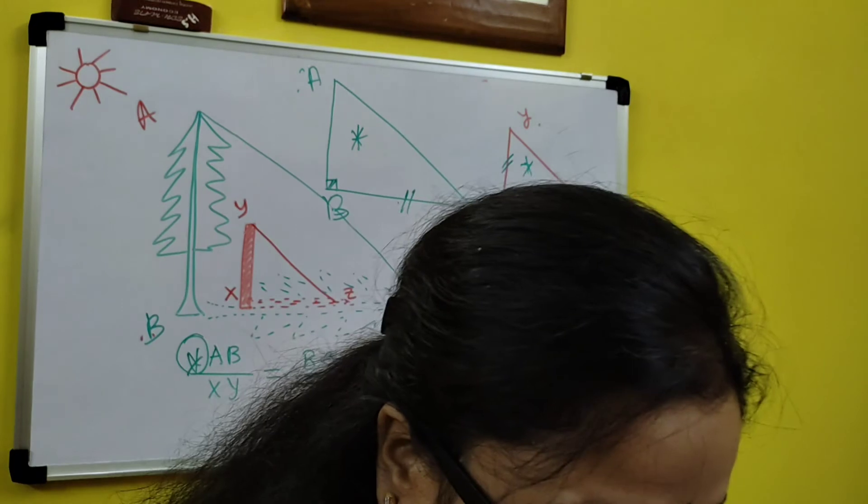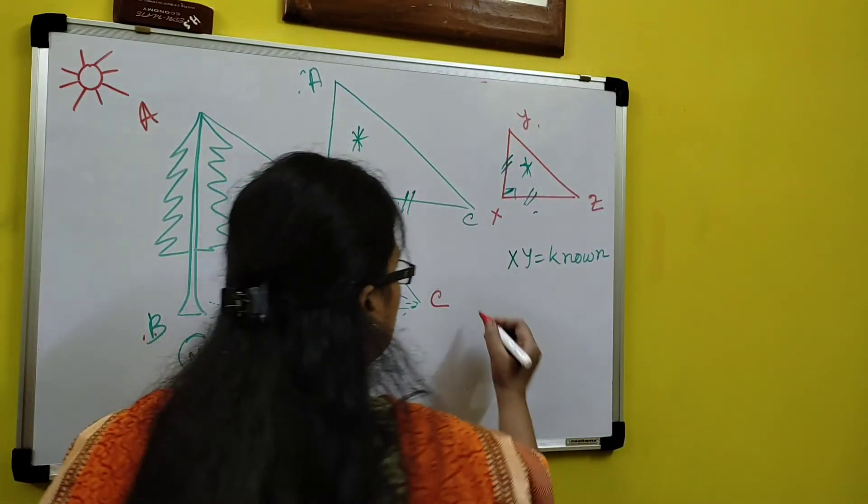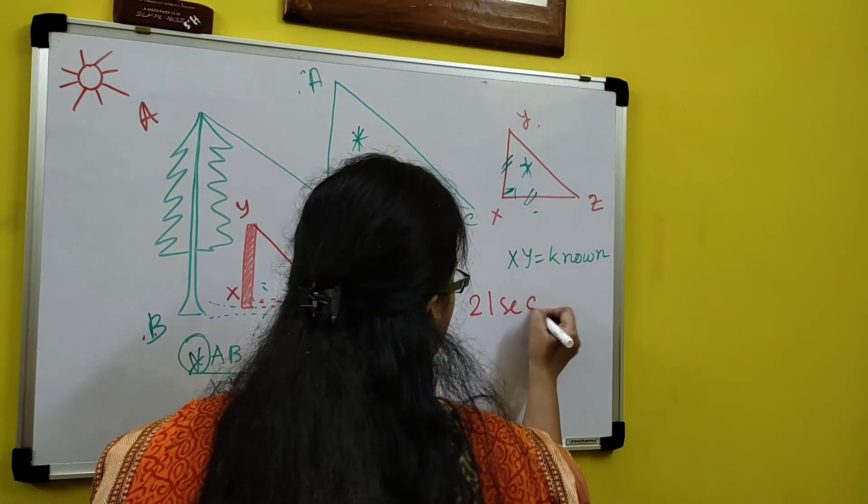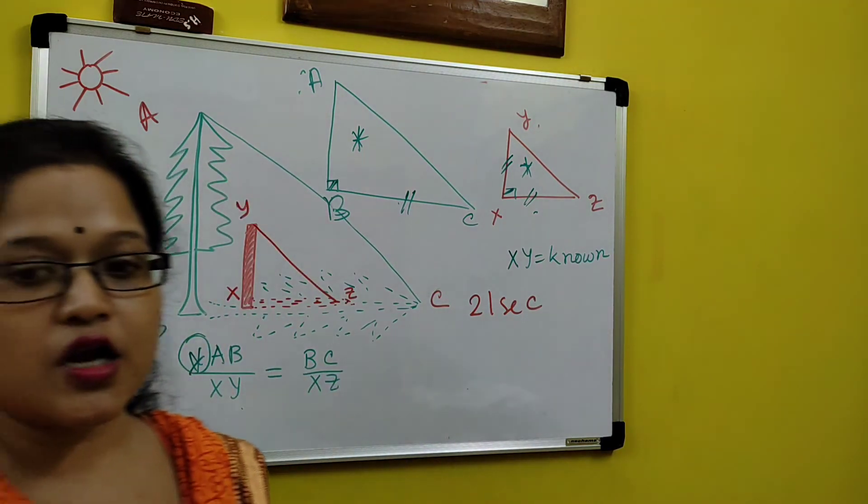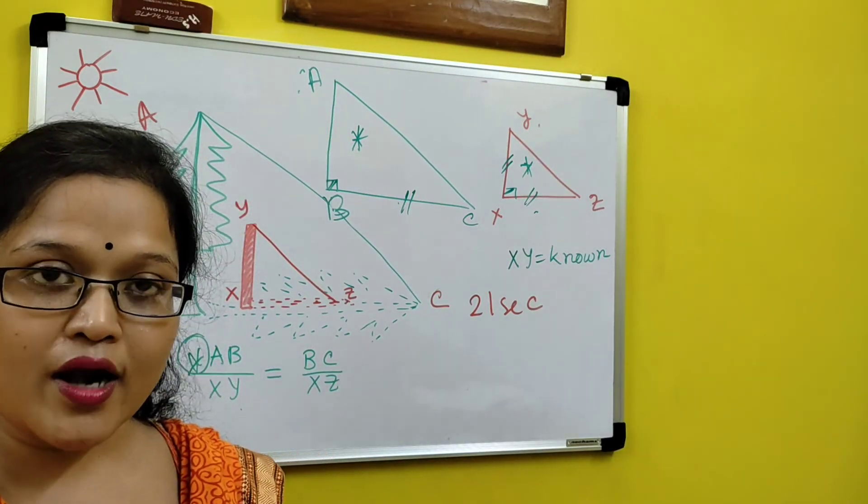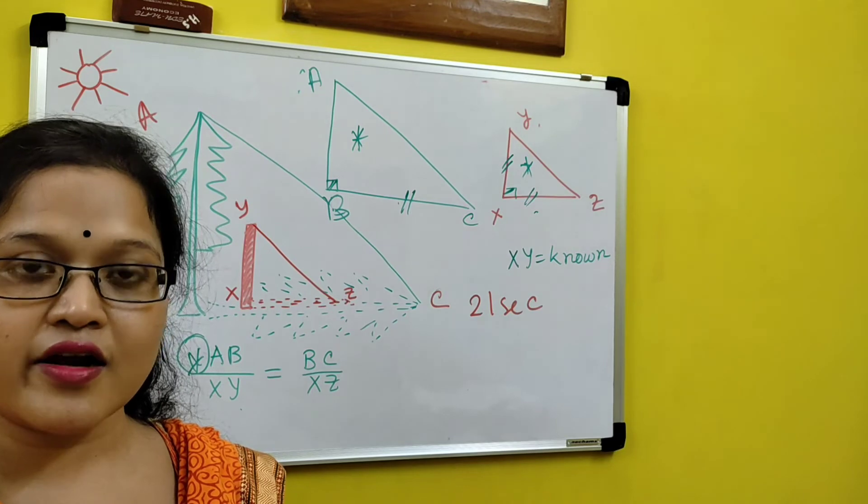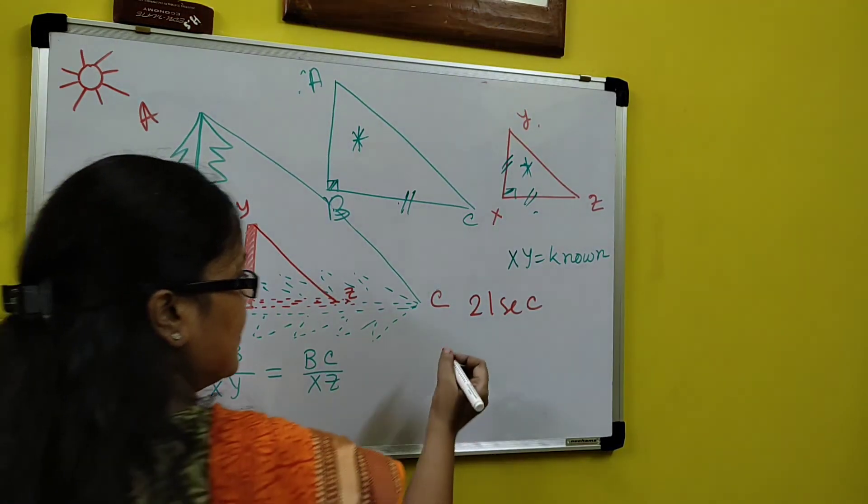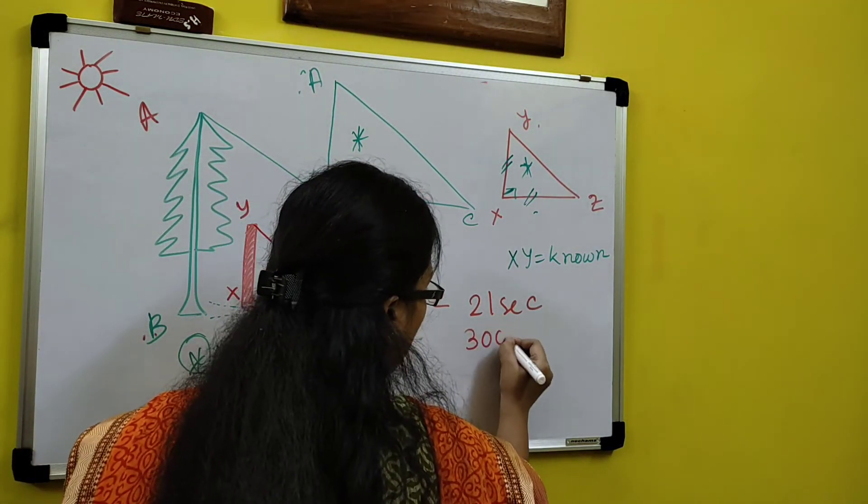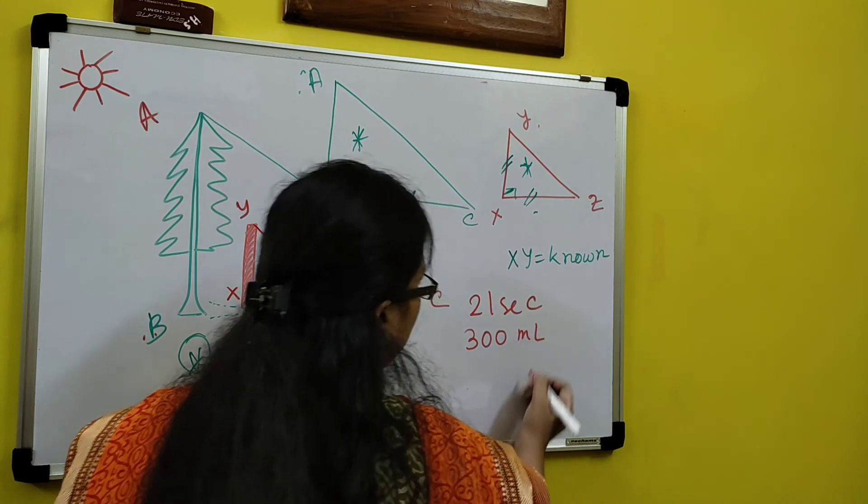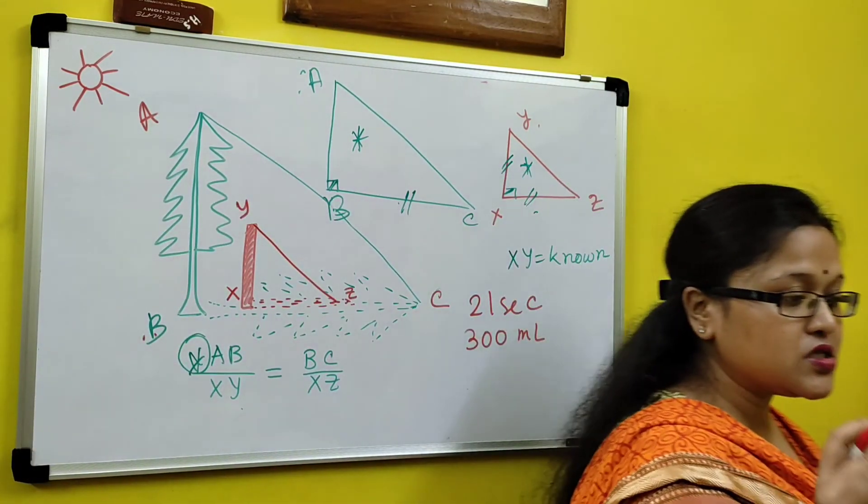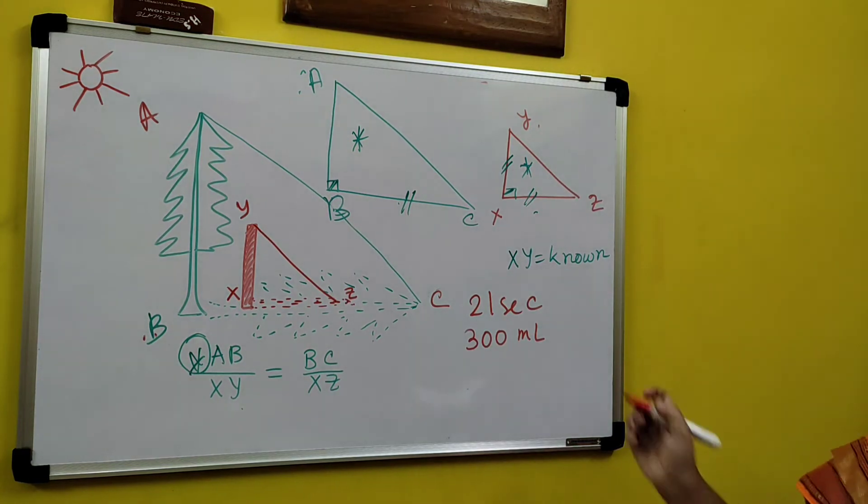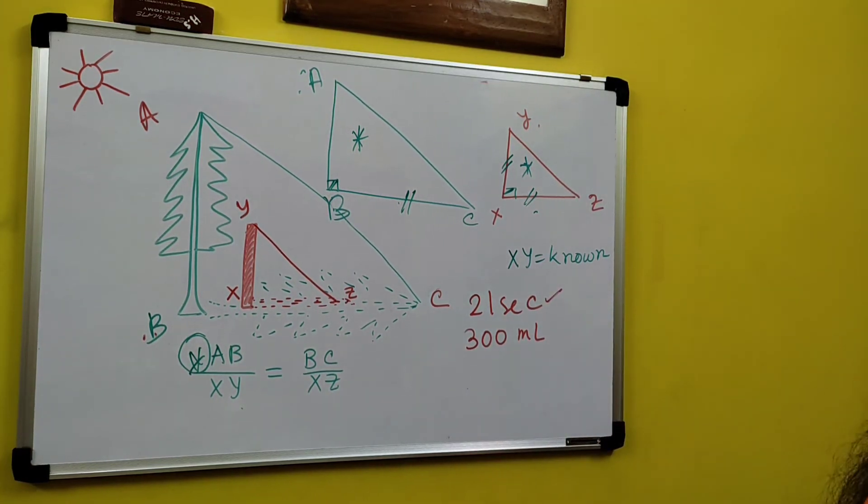That is 21 second. And by volume cylinder, that cylinder I can't show you right now because the container what I have taken, that is a 300 ml container. So how much water I have taken, I got that is 300 ml. To fill that 300 ml, I am taking 21 second. That is time taken, 21 second to fill it.